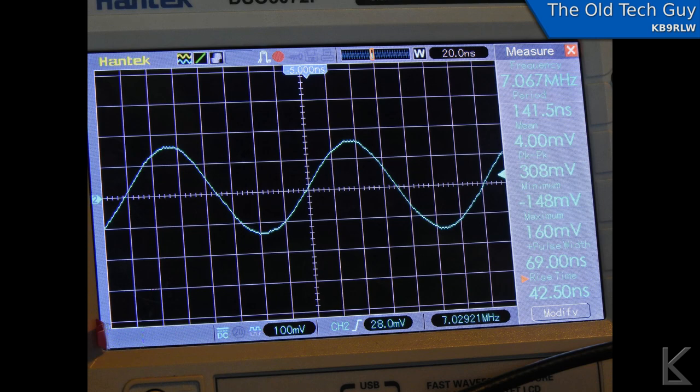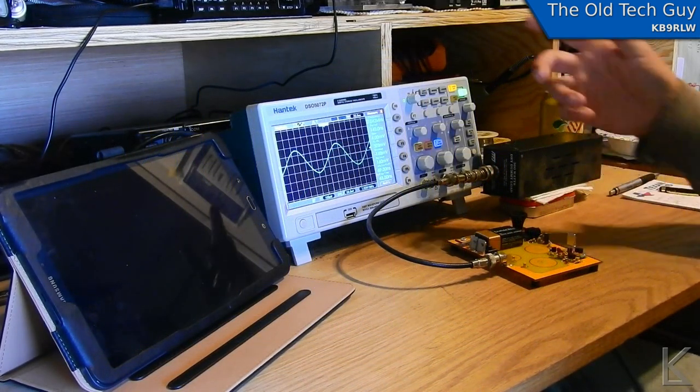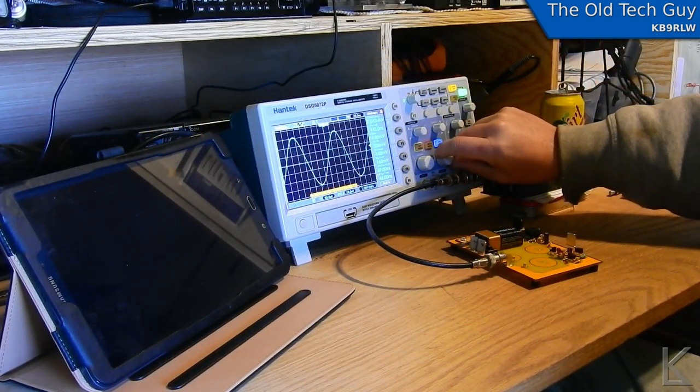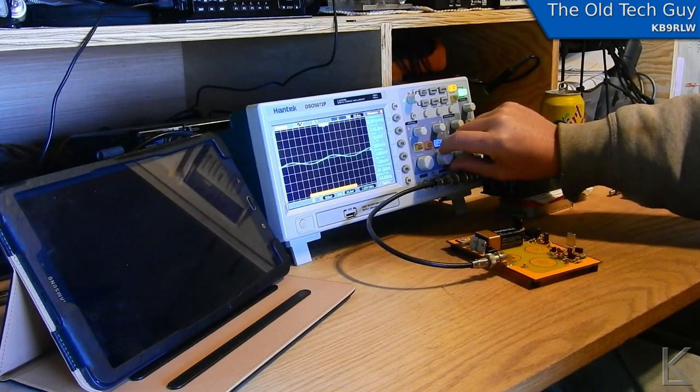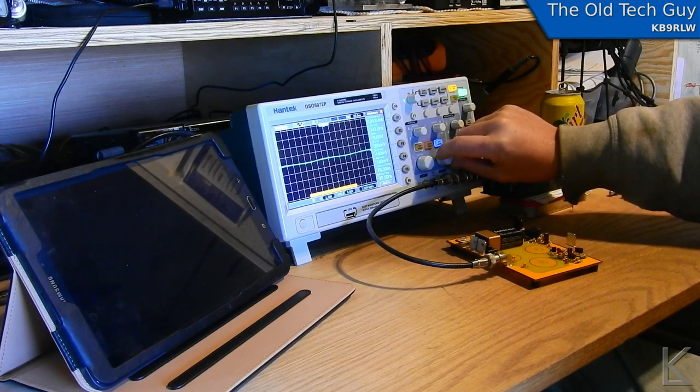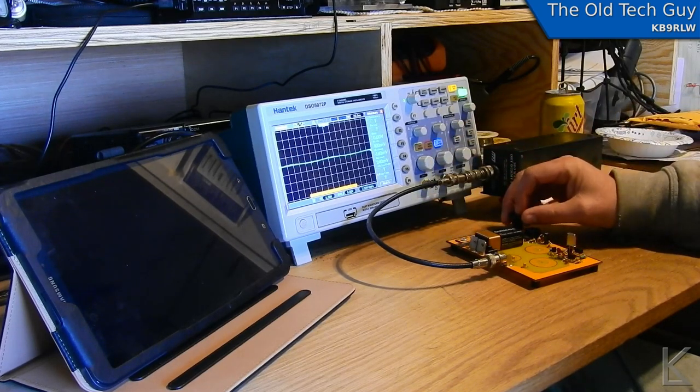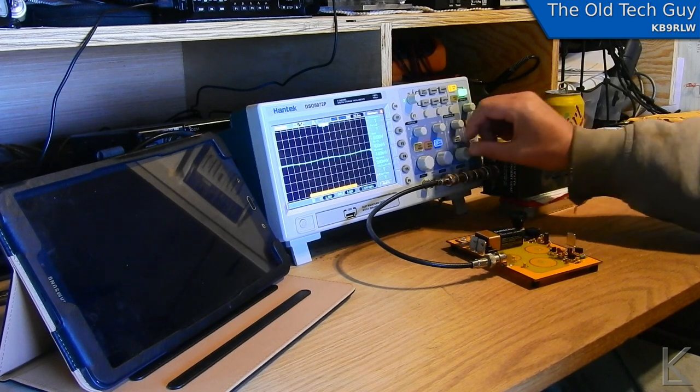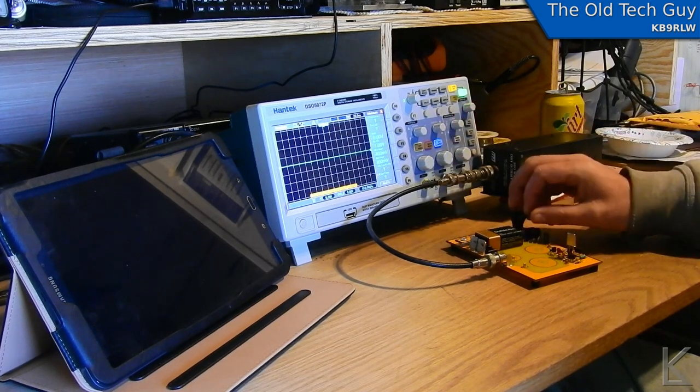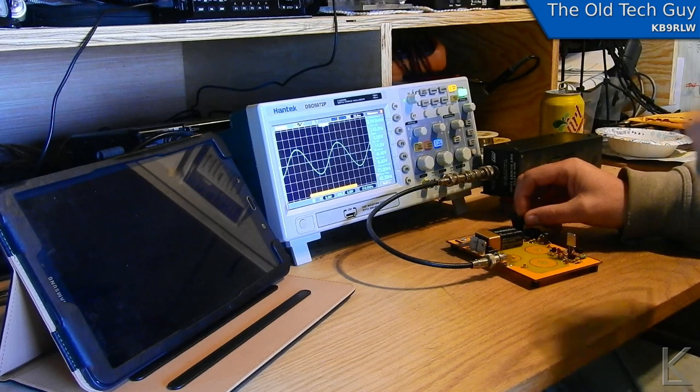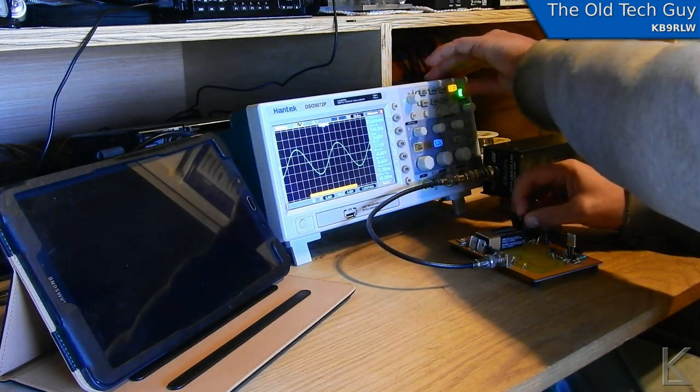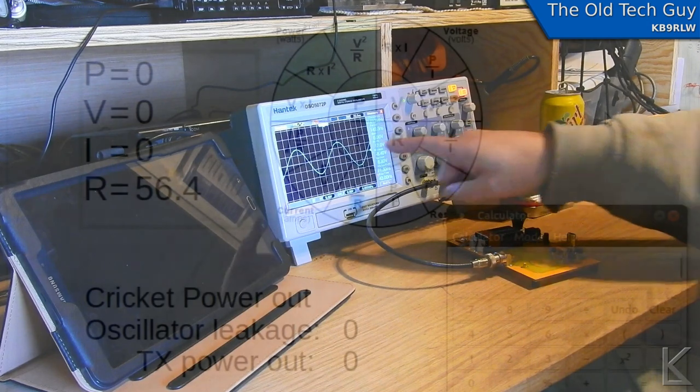So I'll record that and then I went ahead and transmitted and I had to bring the scope's sensitivity down obviously because we're going to be putting a little bit more power in. And I measured that at 17 volts. 17 volts peak to peak for transmit. So now I have my two voltage measurements and I can go and I can calculate the power.